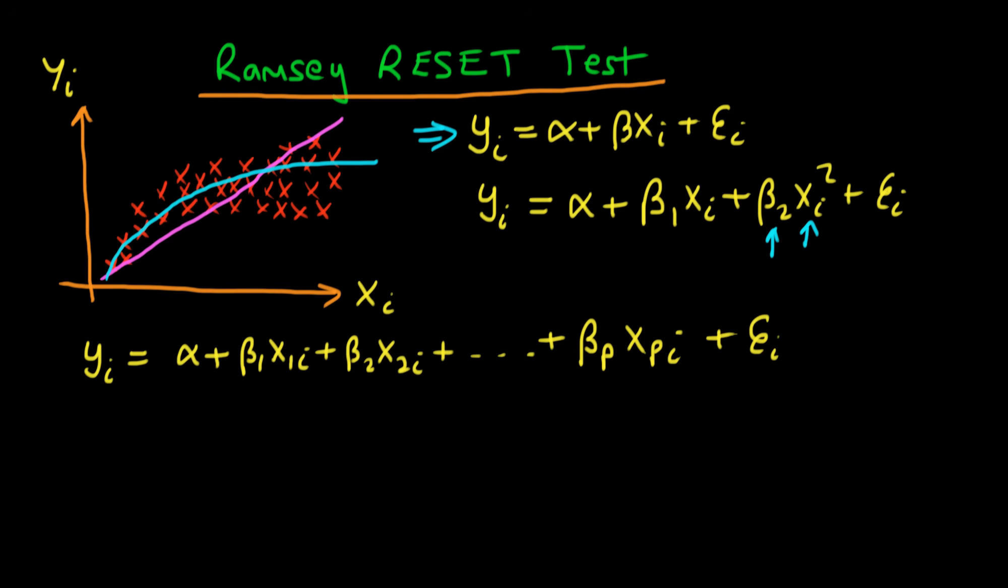But let's say that what we wanted to test now is we wanted to test whether it was the case that actually we should be including non-linear terms of the individual independent variables in our model. So then what you might think to do would be to include all the various quadratic terms. So we might include gamma 1 times x1i squared plus gamma 2 times x2i squared all the way through to the quadratic term of the pth independent variable xpi squared.